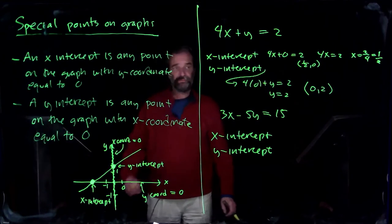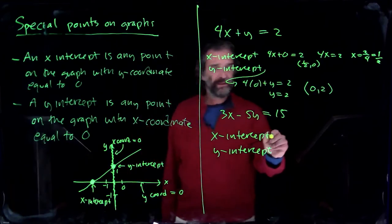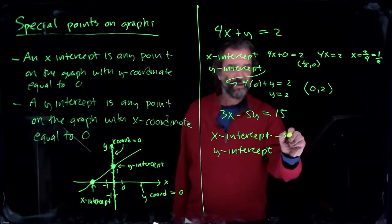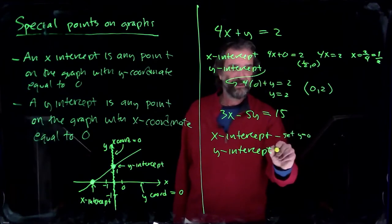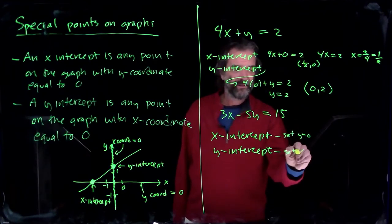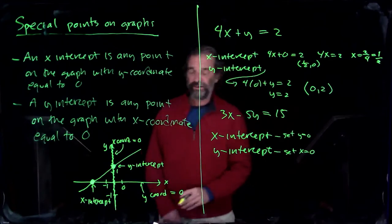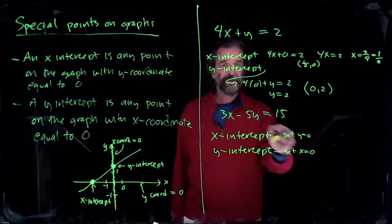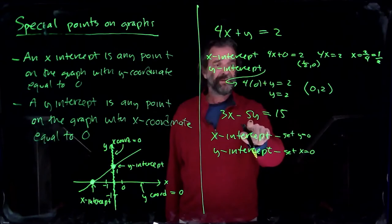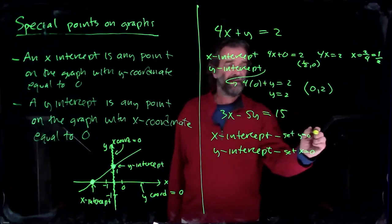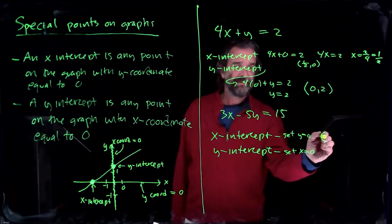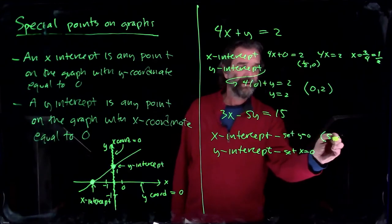And then another example. We'll just see what happens here. We set y equal to 0 to get the x-intercept. We set x equal to 0 to get the y-intercept. So we set y equal to 0. 5y is 0. We get 3x is 15. And x has to be 5. And y is 0.